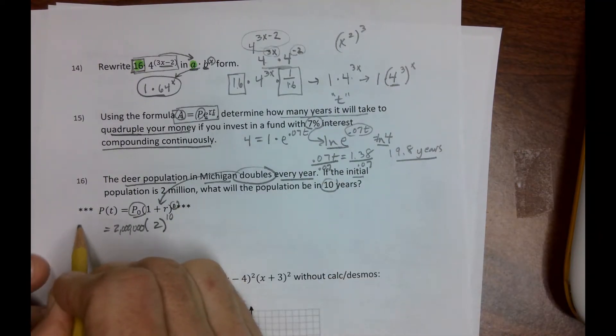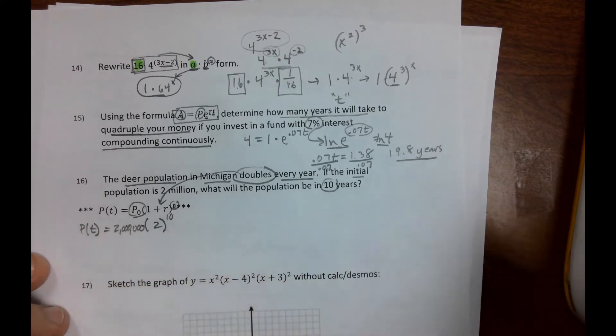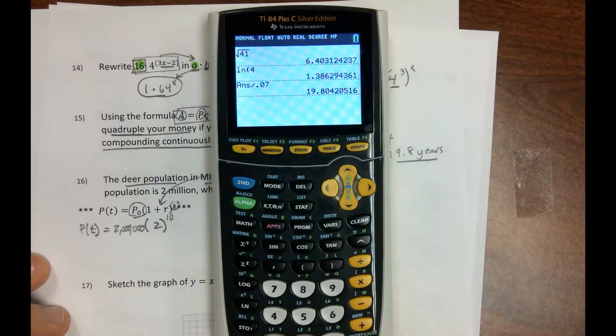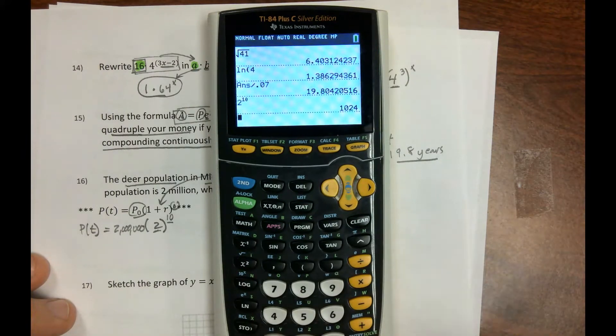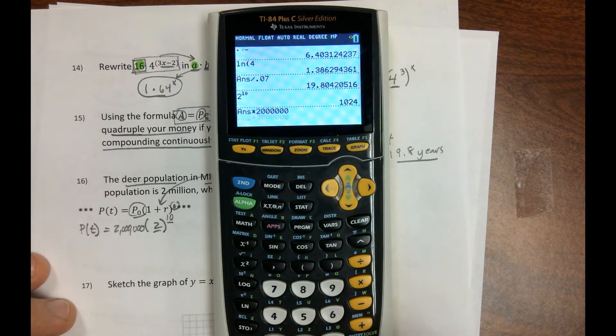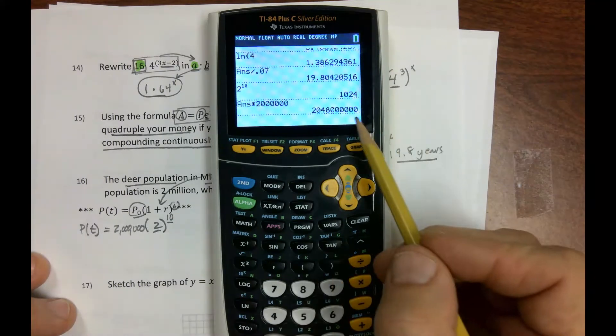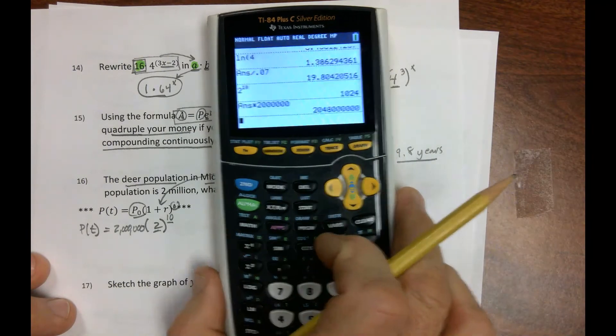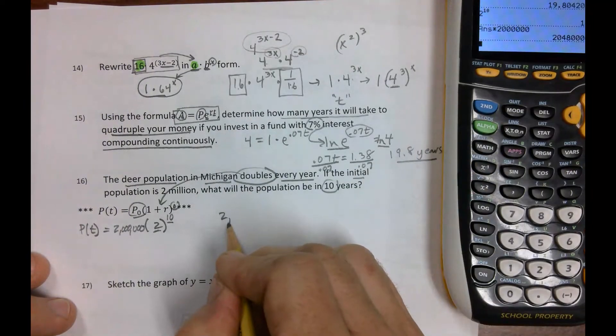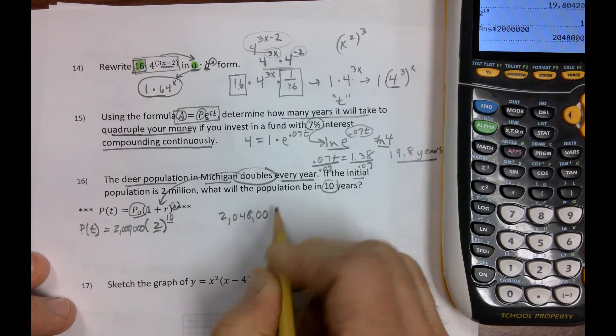And this one does not require any logs. You just need to know how to use your calculator. So 2 to the 10th power is 1,024 times 2 million. What the heck is that number?